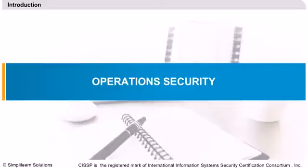Auditing and monitoring are the mechanisms, tools, and facilities that permit the identification of security events and subsequent actions to identify the key elements and report the pertinent information to the appropriate individual, group, or process.